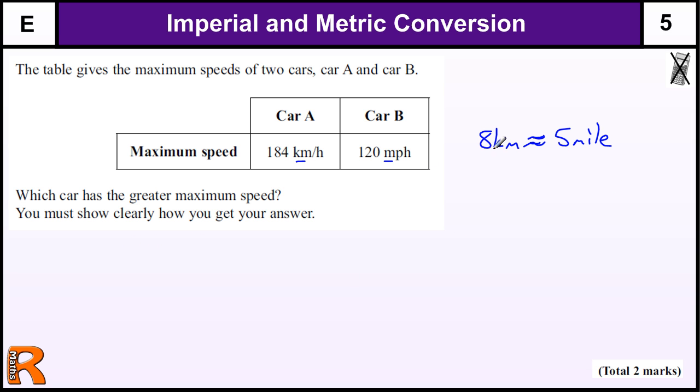We've got two ways of approaching it. We can either change the kilometers into miles by working out how many 8's there are in 184, and then times that by 5 to work out how many miles per hour it is.